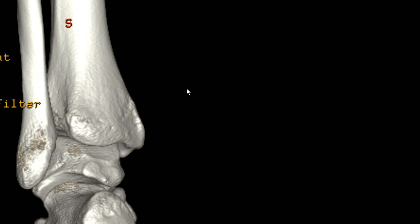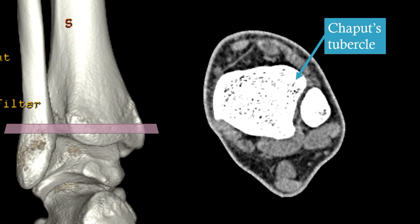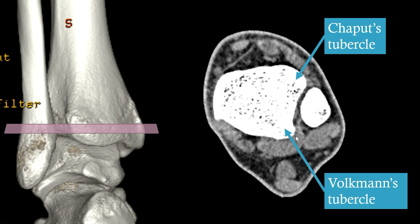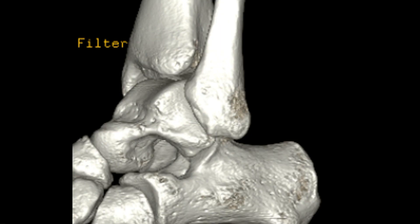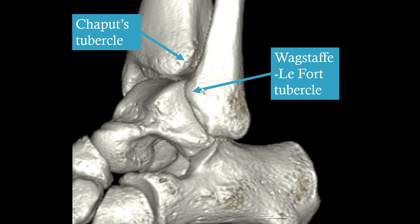This is a view from behind and a cross section at this level, with some other bony landmarks to know. We have Chaput's tubercle at the anterior aspect of the lateral tibial platform, and on the back it's Volkmann's tubercle, which is more commonly known because you often see fractures here. You can also have isolated fractures of Chaput's tubercle. There is also a tubercle on the distal fibula known as the Wagstaff-Lefort tubercle, and the anterior syndesmosis basically connects these two tubercles.